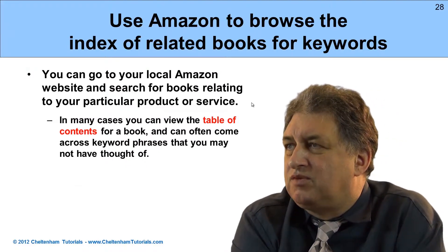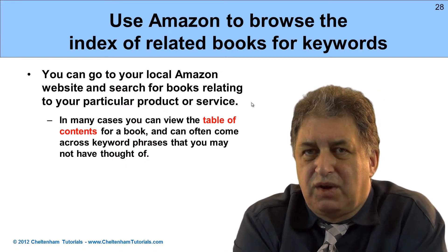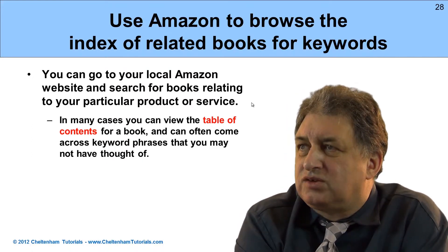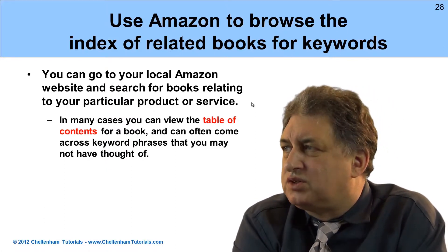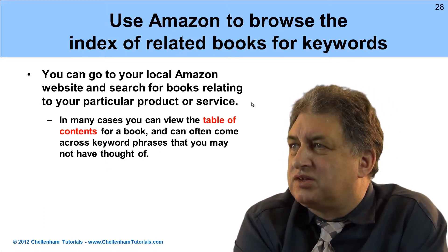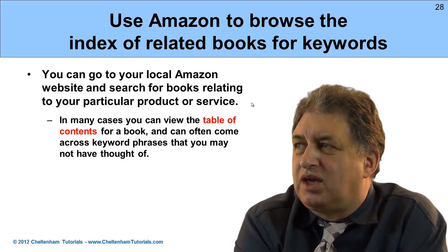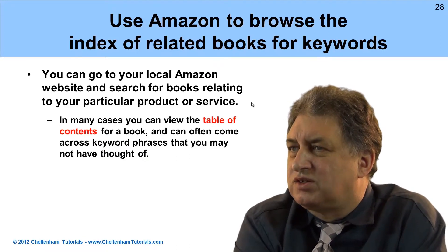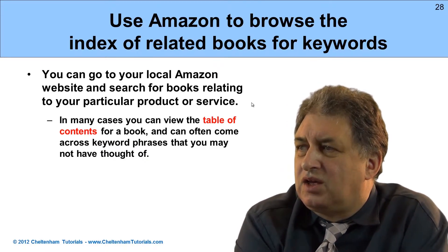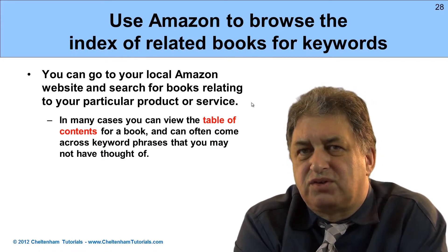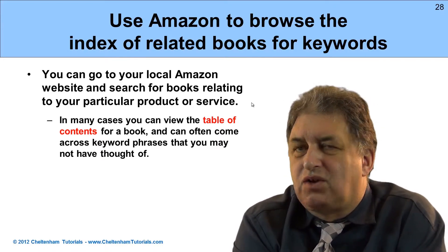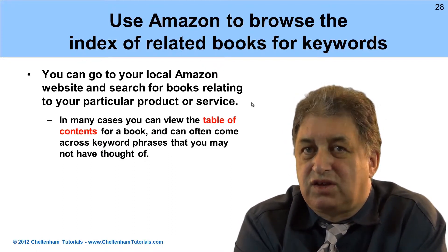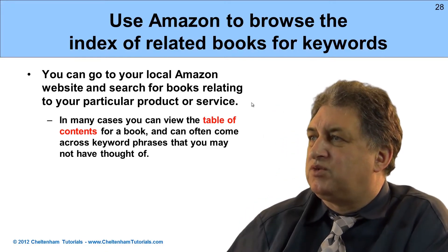Remember, we're talking about investigating keywords and making sure you have the right set of keywords to promote your particular website. We've looked at ways of using Google to do research on your competitors. Something else you might like to think about is going to Amazon — Amazon.com or Amazon.co.uk — and in many cases you can find books relating to your particular product or service. If you look in the table of contents for each book, it will give you access to maybe other keywords or phrases you hadn't thought about. It's just another way of doing keyword research.